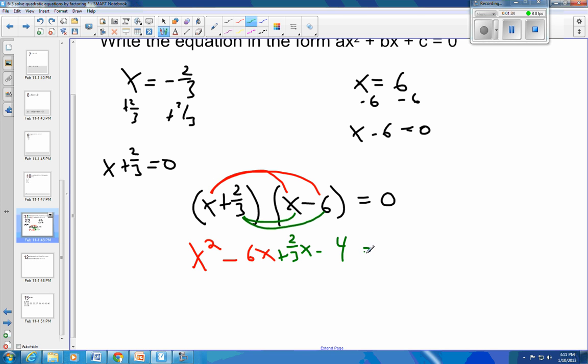Then I'm going to combine my like terms. So x squared minus 6x plus 2 thirds. So minus 6 plus 2 thirds. They're different signs. One's positive and one's negative. So I've got to subtract. So that's 5 and 3 thirds. And I end up with 5 and 1 third negative. So this is minus 5 and 1 third x minus 4 is equal to 0.